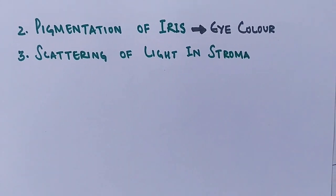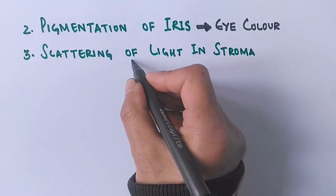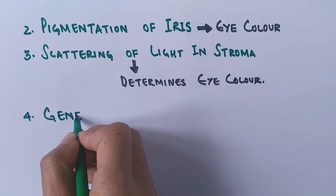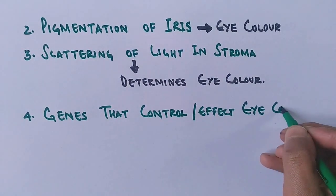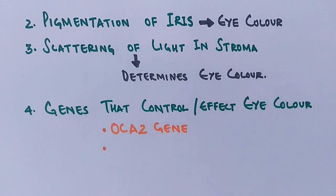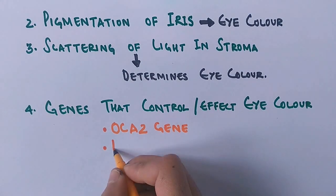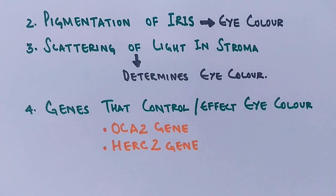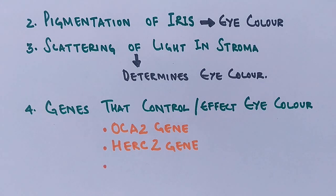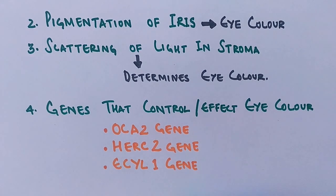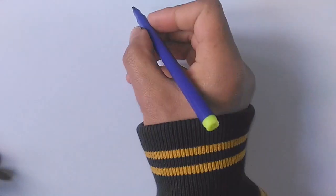It has been observed that Tyndall scattering and sometimes Mie scattering are responsible for eye color too. The major genes that control eye color are the OCA2 gene on chromosome 15, the HERC2 gene also on chromosome 15 which acts adjacent to OCA2, and the ECYL1 gene on chromosome 19. There are many other genes that contribute, but these three are among the major ones.